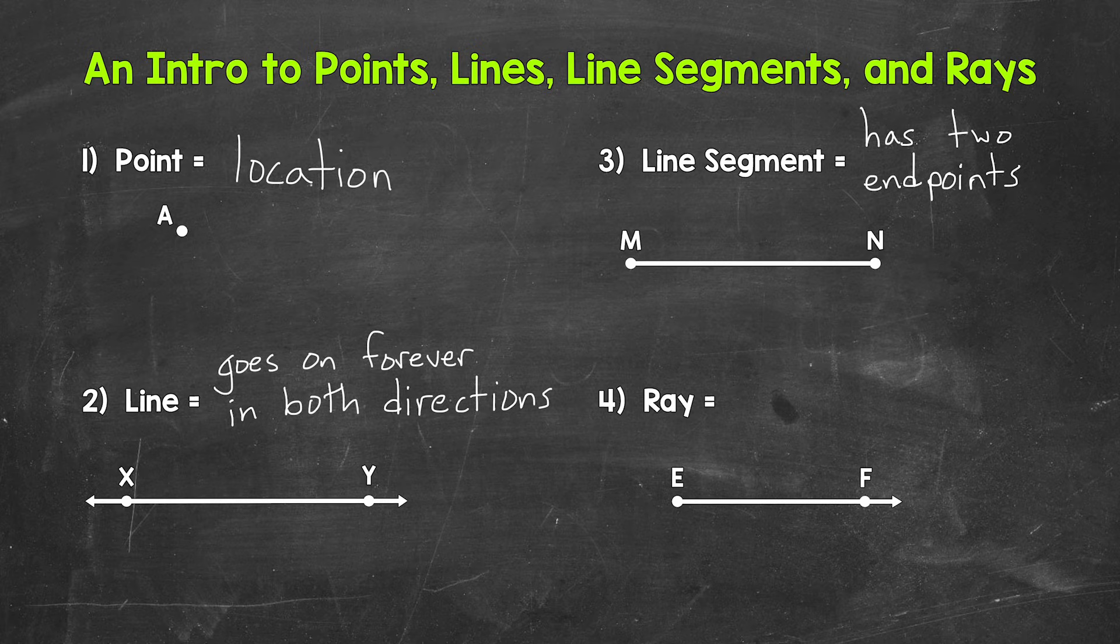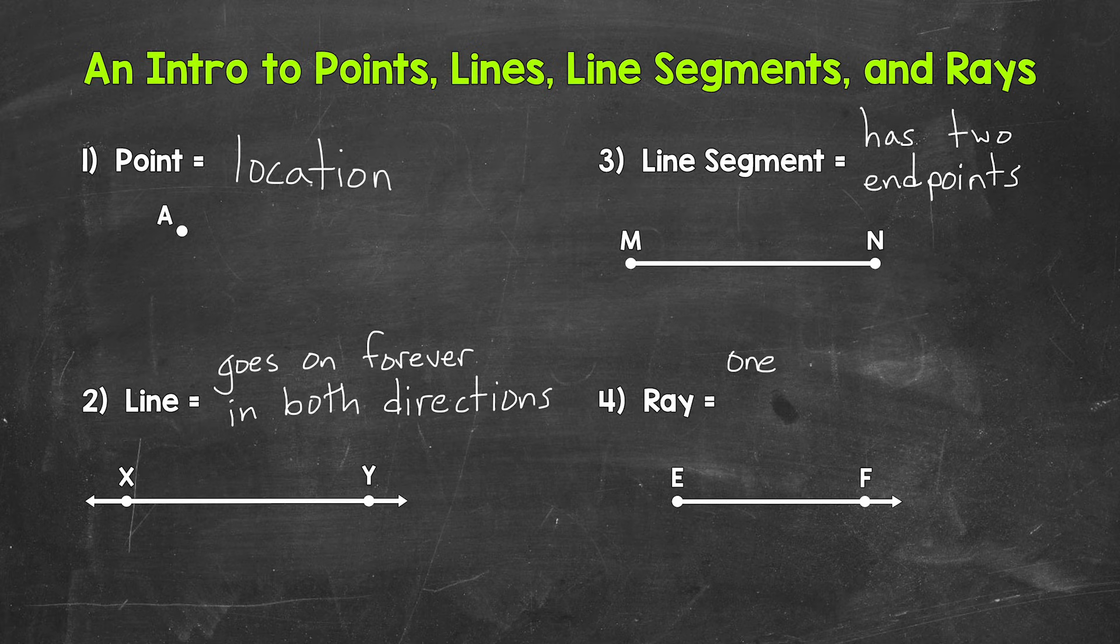The sun is the endpoint, and then the ray goes from there. An endpoint and then goes on forever in one direction. For our notes, let's put 'one endpoint and goes on forever in one direction.'